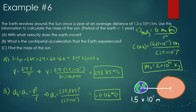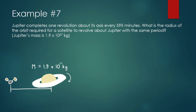For the last problem: Jupiter completes one revolution about its axis every 595 minutes. What is the radius of the orbit required for a satellite to revolve about Jupiter with the same period? We start with force of gravity equals G times mass of satellite times mass of Jupiter divided by r squared, and we're solving for r.